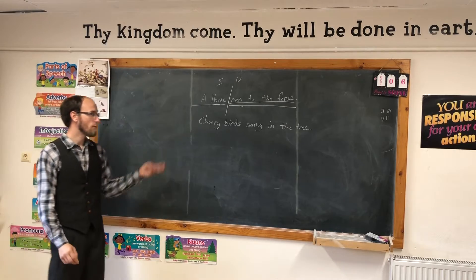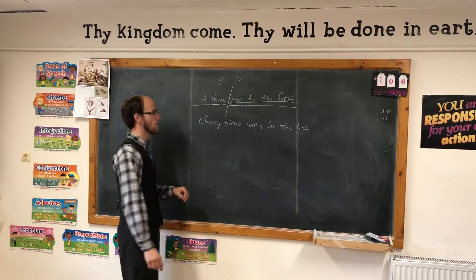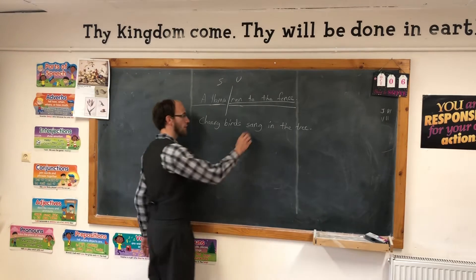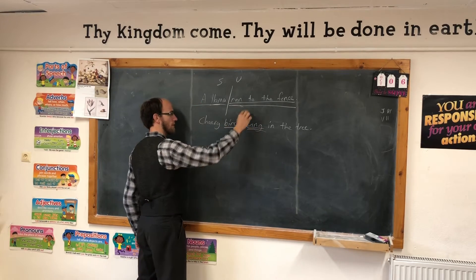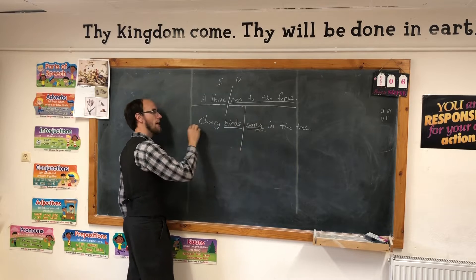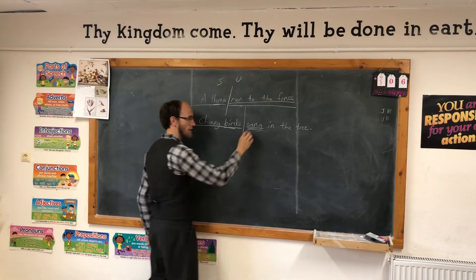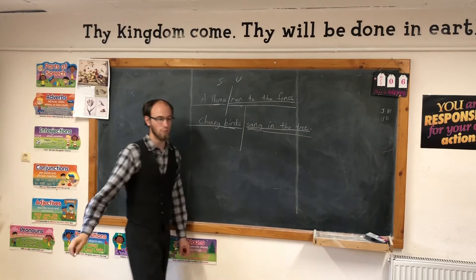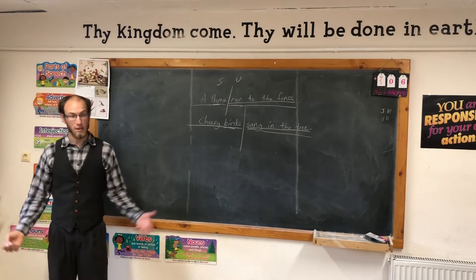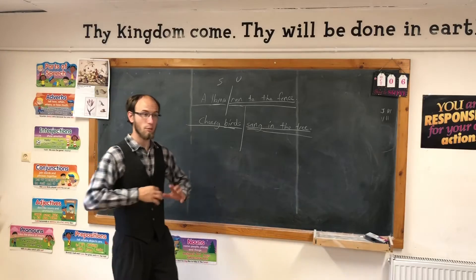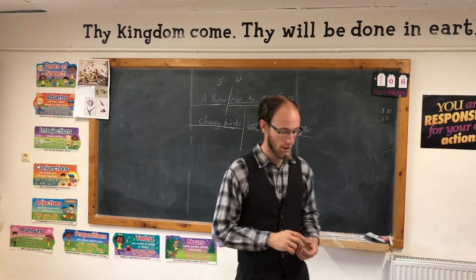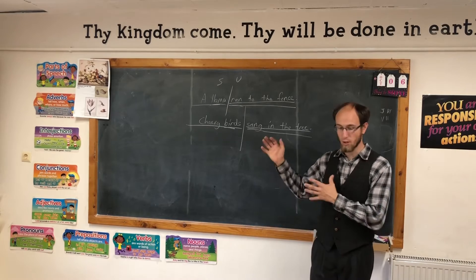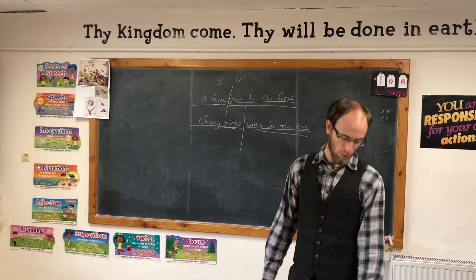Let's find the simple verb in the next sentence: 'Cheery birds sang in the tree.' What's the verb? Sang. Who or what sang? Birds. So we divide it right between 'birds' and 'sang.' All these words would be the complete subject, and all these words would be the complete predicate. Sentences are made up of two parts: a complete subject and a complete predicate. The complete predicate says what action is happening — it says what the complete subject does or is.